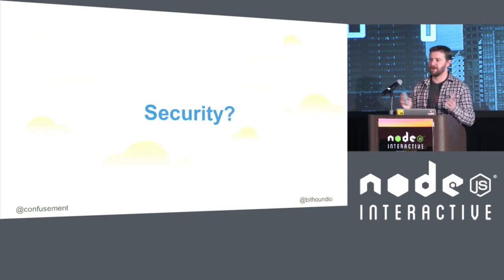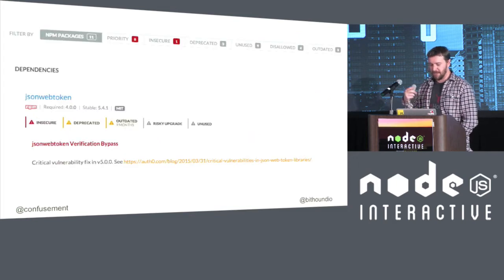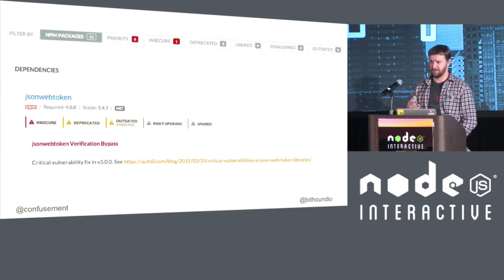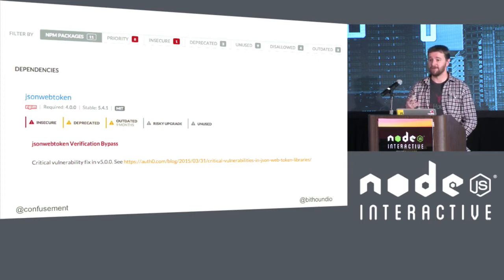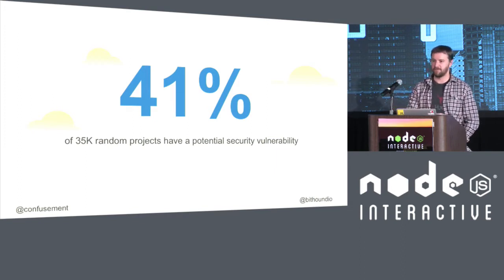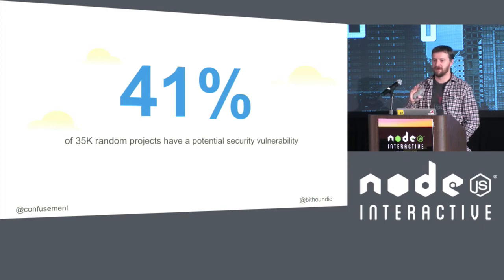Now security — this is top of mind for a lot of people. We're seeing huge investments in internet security companies. Being able to understand whether you're potentially exposed to a security vulnerability is super important. With the usage of NPM modules and the whole dependency tree, there is potential for you to be vulnerable to a security issue even though you might not be directly requiring a dependency that is insecure. When we ran our analysis, we picked 35,000 random projects from our system — some are NPM modules, some are not — and looking at the entire dependency tree, 41% of them had a version of a dependency with some known security vulnerability.